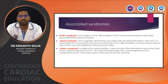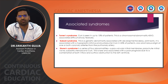Shone syndrome is a series of four abnormalities: supravalvular mitral membrane, parachute mitral valve, subaortic stenosis, and coarctation of aorta. This is rare and associated with poor prognosis due to a combination of both inflow and outflow obstruction of the left ventricle.